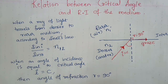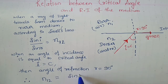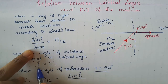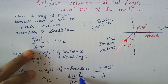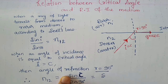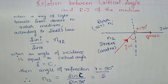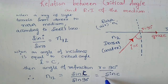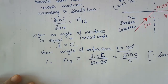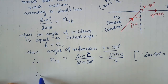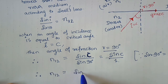So how do we write Snell's law in this case? We substitute: n12 = sin i / sin r. When i equals C, r equals 90 degrees, so sin 90° equals 1. Therefore, n12 = sin C / 1, which gives us n12 = sin C.